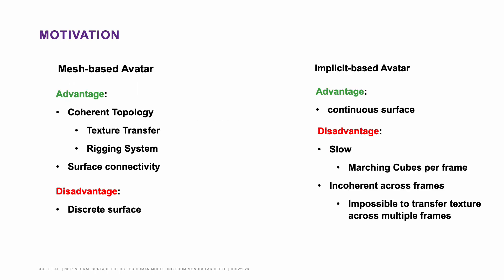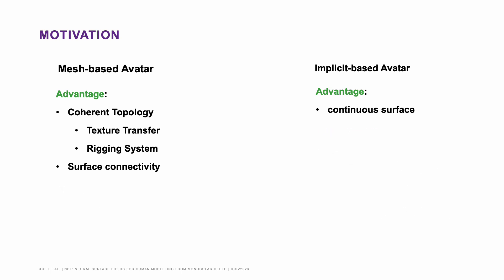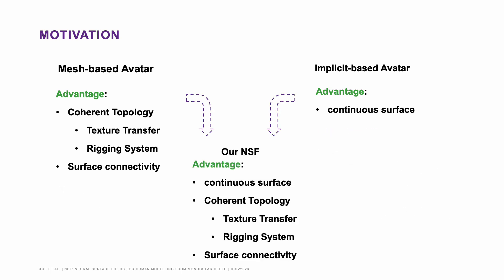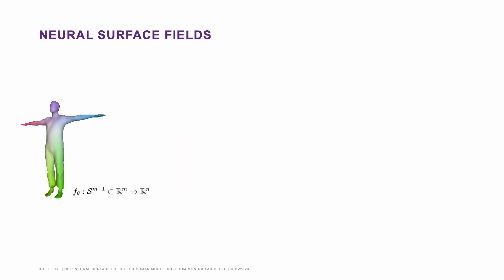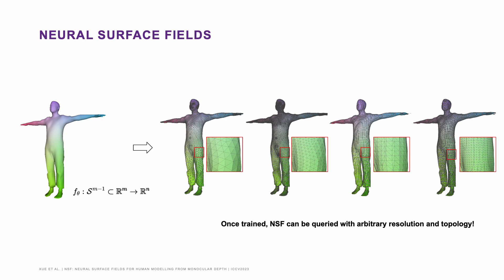We can see that the aforementioned representations are complementary. Our motivation is to combine the advantages of mesh-based methods and implicit-based methods. The key insight of NSF is to define the neural fields directly on the surface. In this case, we still enjoy the connectivity and the coherency of the mesh surface. Once trained, our NSF can generalize to surfaces with arbitrary resolution and topology without retraining.